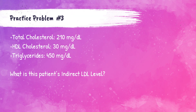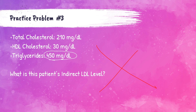Practice problem three. This patient's total cholesterol is 210 milligrams per deciliter — a little bit elevated, higher than the normal reference range. HDL cholesterol is 30 milligrams per deciliter, which is lower than the normal reference range. Recall HDL is the good cholesterol, so you want a higher level. And this patient's triglycerides are 450 milligrams per deciliter, which is elevated. So can we do the indirect LDL calculation? No — the calculation is only valid if triglycerides are under 400 milligrams per deciliter, and this patient has 450 milligrams per deciliter.